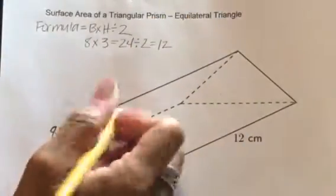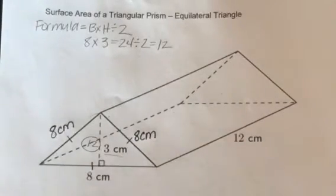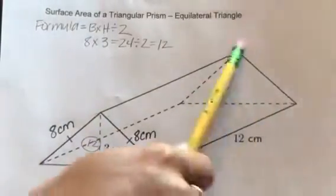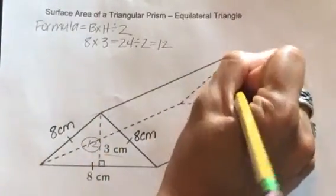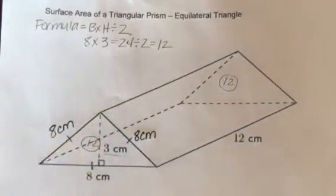So this triangle will be 12 square centimeters. We know that this equilateral triangle will be equal to this equilateral triangle, so I also now know that this back triangle is also 12. So we've solved for two faces.